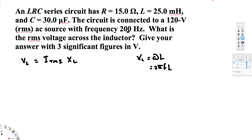To find Irms, we use the equation: Irms equals Vrms over impedance. Vrms is already given in the question — that is 120 volts RMS.